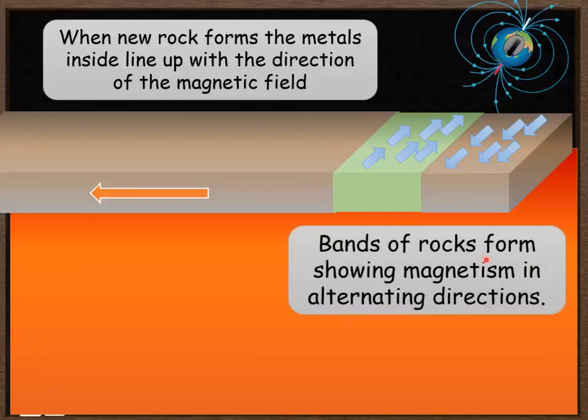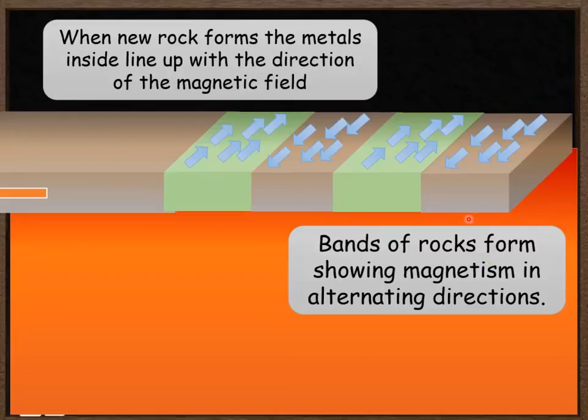So you get bands of rock forming that show the magnetism in alternating directions as the Earth's magnetic field switches. So here we go, you get these bands of the magnetite aligning itself in opposite directions.